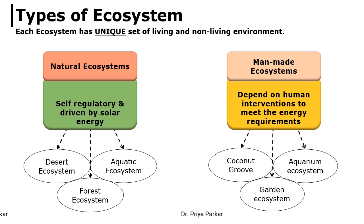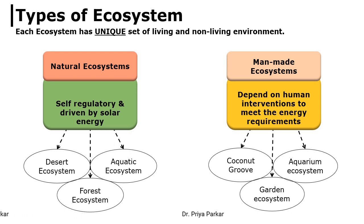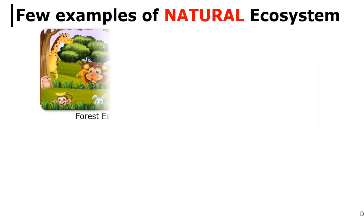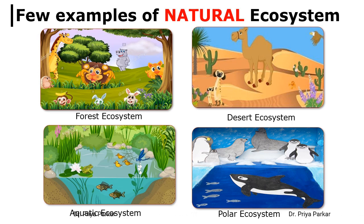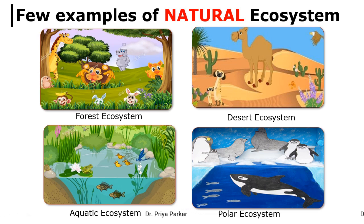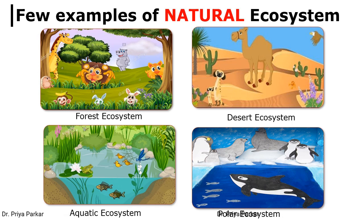On the other hand, man-made ecosystem depends upon human beings for its survival. Coconut groves, aquarium, garden ecosystem and farm ecosystem are some examples of man-made ecosystem. The plants and animals found in different natural ecosystems are different. For example, the fish found in salty sea water will be different from the fish found in fresh river water. Similarly, the trees found in rainforest will be different from those found in deciduous forest or coniferous forest. Thus, each ecosystem has a unique set of living and non-living organisms.